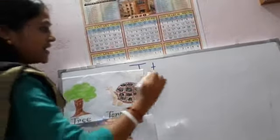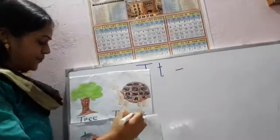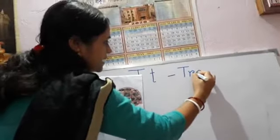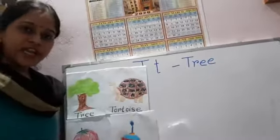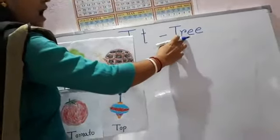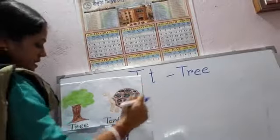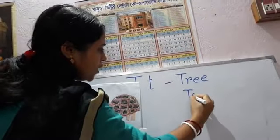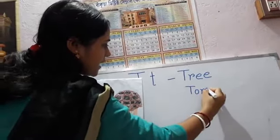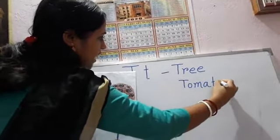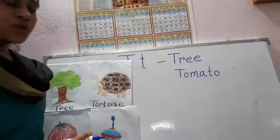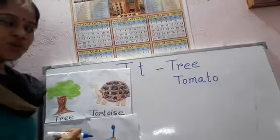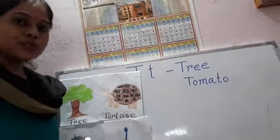Now I am writing two spellings. Tee-ta-tomato. Say with me: Tee-ta-tomato. Learn these two spellings.